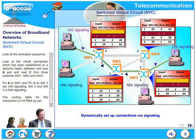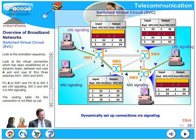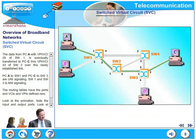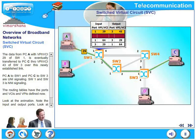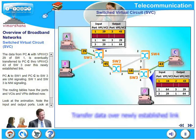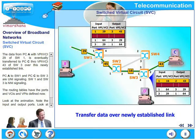The routing table for this connection is not yet filled up. Please note that. The data from PCA with VPI/VCI 29 of SW1 is eventually transferred to PCC through VPI/VCI 43 of SW3 over this newly established link. PCA to SW1 and PCC to SW3 are UNI signaling.